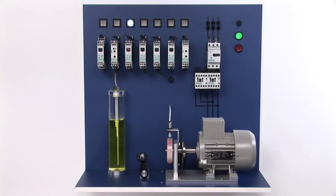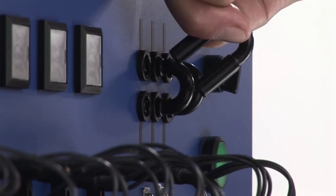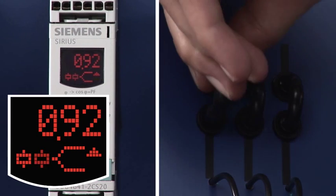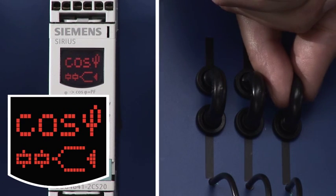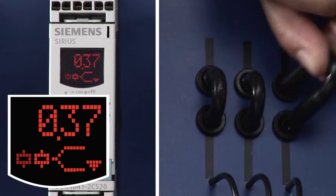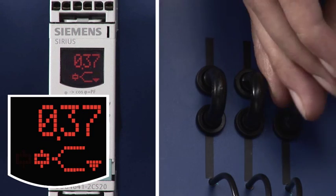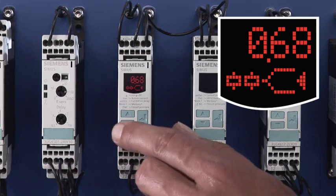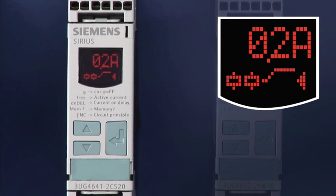The device also detects cable breakage or phase failure. Depending on the affected phase, this leads to a significant increase or decrease of the power factor. Detection is also possible via the active current as it rises during the remaining phases.